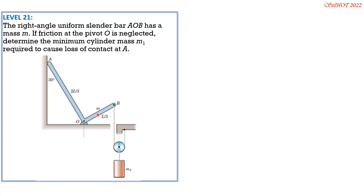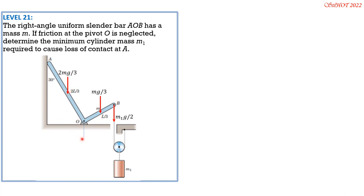If this length is L/3, this portion has weight Mg/3. The two-thirds length portion carries two-thirds of Mg. The one-third portion of Mg acts at the center of that uniform bar. The tension here is M1g and there are two cables attached, so this is M1g/2. Since this angle is 30 degrees, two-thirds L times sine 30 is L/3. It acts at the center, so the distance from O to this weight is L/6.